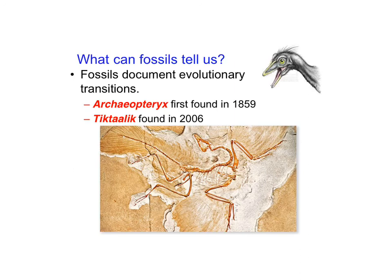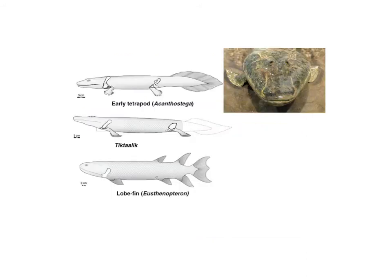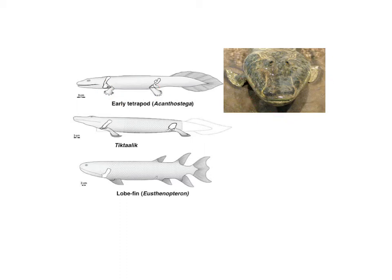Fossils also give us an idea of transitions that have happened in evolution. We've already talked about Archaeopteryx, first found in 1859 — here's the fossil, and this is what we think it looked like. Notice it has teeth and feathers, which is very unusual. More recently, there's the Tiktaalik, a transitional fossil between the lobefin fish like the coelacanth and the early tetrapods that came out onto land. There was a missing piece, and in 2006 they found it. You can see it has characteristics of both the lobefin fish and the early tetrapods.